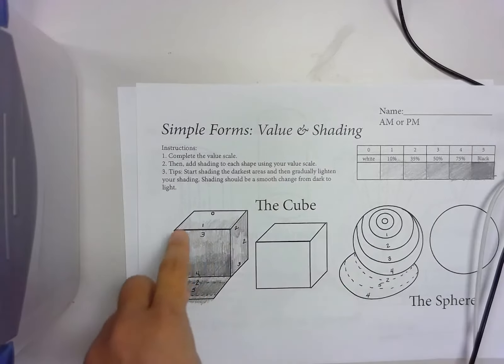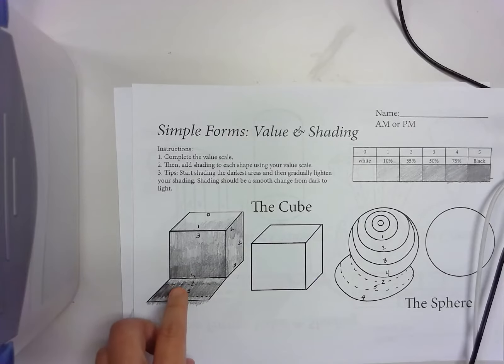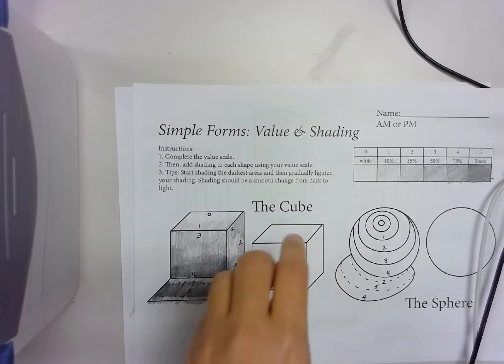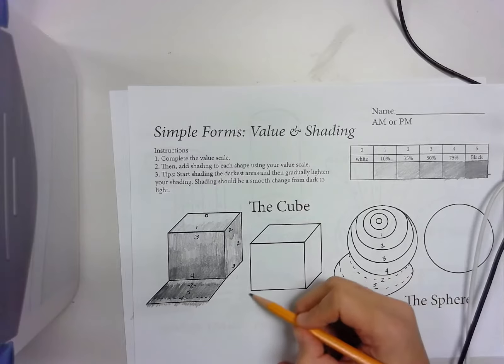Now on this one, you're going to take what you learned from here and replicate it on this cube. So it's a matter of creating those same values, but on this cube here. So it should match, but you just don't have the numbers, and then you have to create that cast shadow.